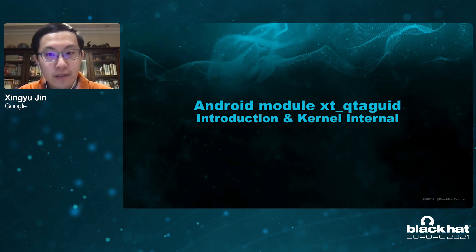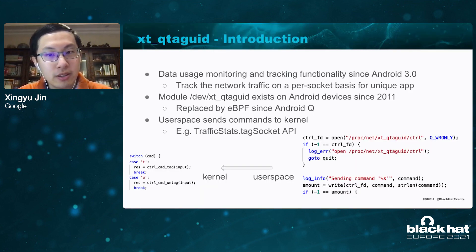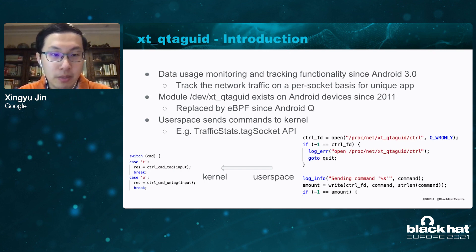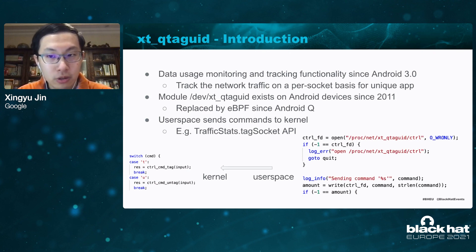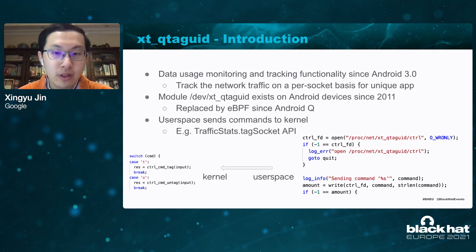Let's take a look at the xt_qtaguid Android kernel module. The module is mainly used for tracking network traffic on a per-circuit basis for a unique app since Android 3. It was replaced by eBPF since Android Q, so only Android Pie and earlier Android versions are affected. Basically, a user-space program may send command data to the kernel module, such as asking the kernel to tag a socket or untag a socket. Tagging a socket means we want the Android kernel to check the specific socket file descriptor and provide network data usage information back to user space. You can interact with the kernel module by ADB, or use Android APIs like TrafficStats.